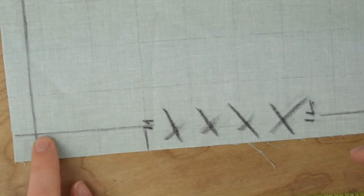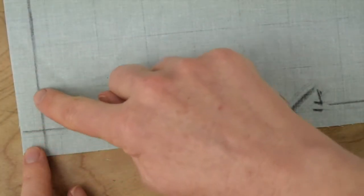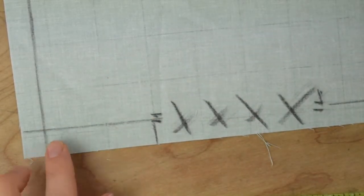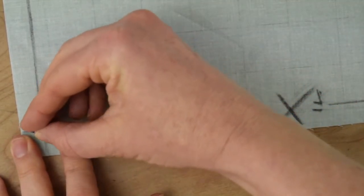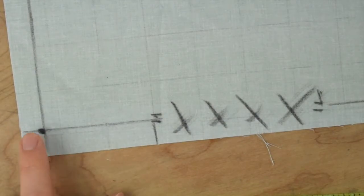Now mark number four is where they turn the corner. So anytime that two sewing lines cross like this, I just have them make a little bit of a bigger dot so that they know that they pivot or turn the corner on a dot.